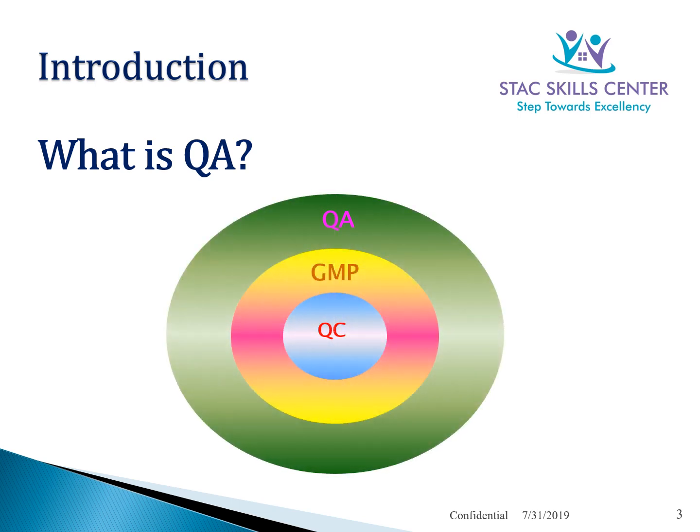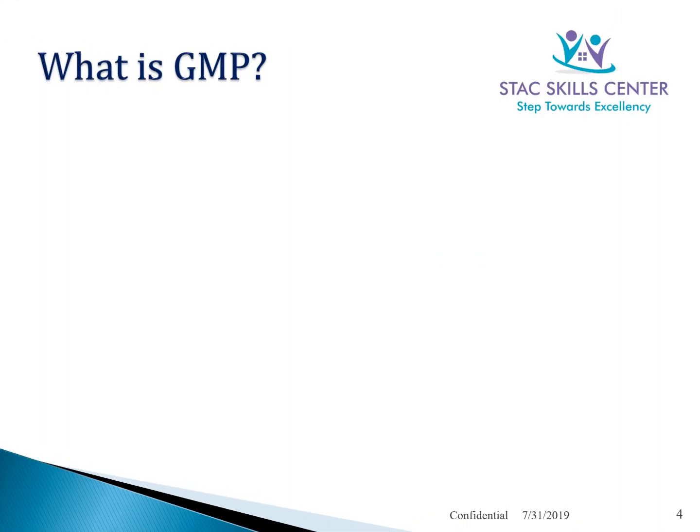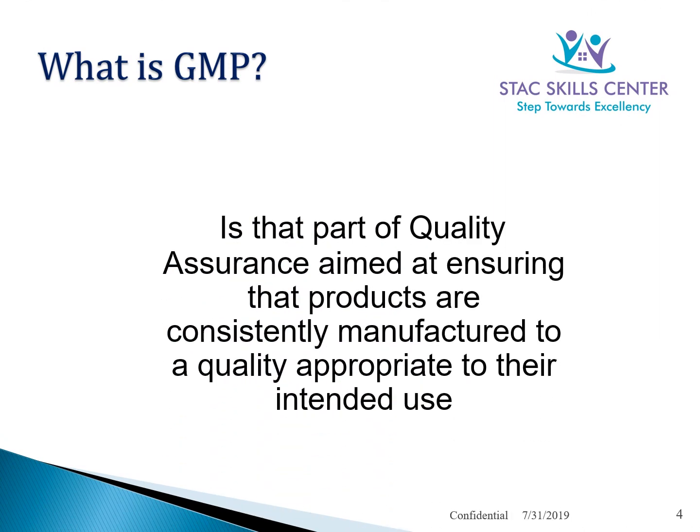From this picture you will get an idea that good manufacturing practices (GMP) is a part of a quality assurance system, whereas quality control is part of GMP. So what is GMP? GMP stands for good manufacturing practices.